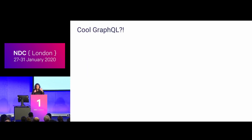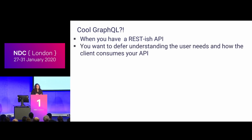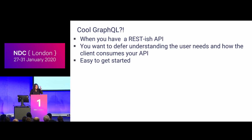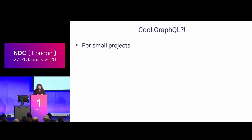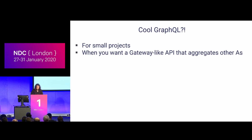When is it cool to switch to GraphQL? When you have a REST-ish API with just the main parts. When you want to defer the understanding of the domain — you expose something to the API, let the front-end guys decide what they need, without needing to sync with them anymore. It's easy to get started: install the packages, understand the building blocks. It has built-in introspection, it's friendly and contract-driven — the client tells you what it needs and you ship it. In .NET we have multiple UI tools. It's great for small projects and when the business needs a gateway-like API that aggregates different APIs and exposes GraphQL endpoints.